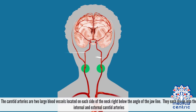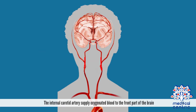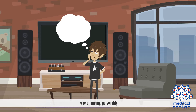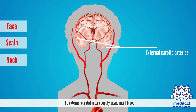The carotid arteries are two large blood vessels located on each side of the neck, right below the angle of the jawline. They each divide into the internal and external carotid arteries. The internal carotid arteries supply oxygenated blood to the front part of the brain, where thinking, personality, and sensory motor functions exist. The external carotid arteries supply oxygenated blood to the face, scalp, and neck.